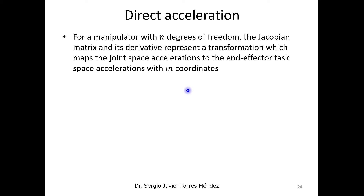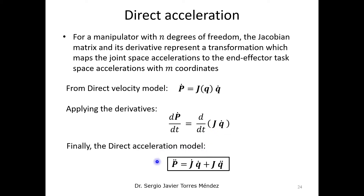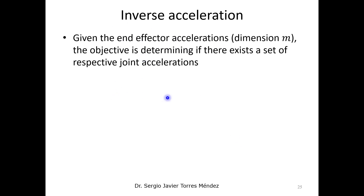In direct accelerations, remember that you need to obtain the acceleration of the end-effector given the acceleration of the joints. We start with the direct velocity model as our mathematical equation, then apply the time derivative to both sides. We obtain the direct acceleration model: the time derivative of the Jacobian matrix times the joint velocities, plus the Jacobian matrix times the joint accelerations, in order to obtain the end-effector acceleration.